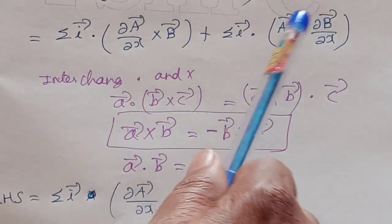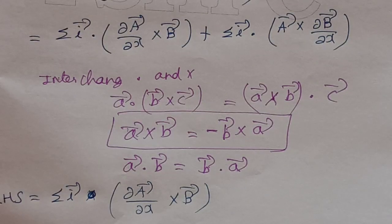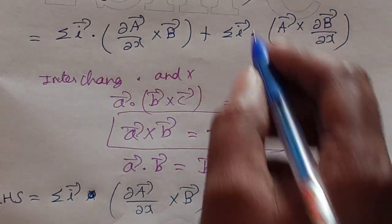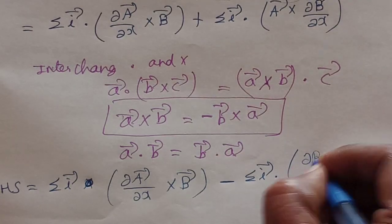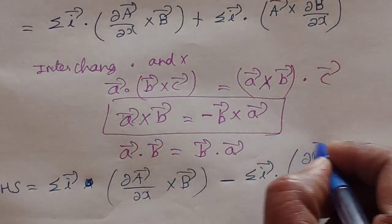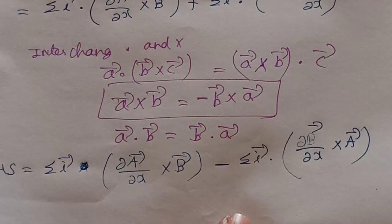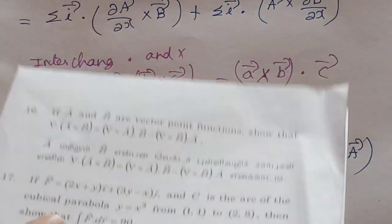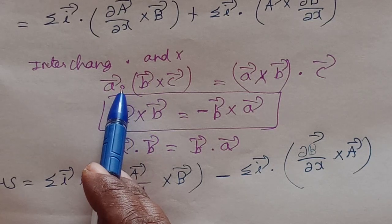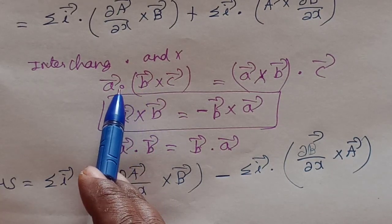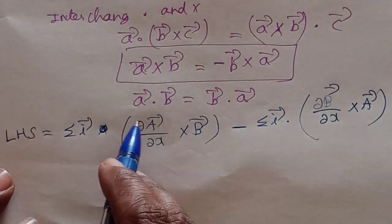Here we have cross (∂a/∂x) dot b vector, and for the second term, a vector cross (∂b/∂x) with a minus sign. We need to interchange the dot and cross. If you interchange dot and cross, the expression rearranges. We can say del×a·b vector comes from these terms.